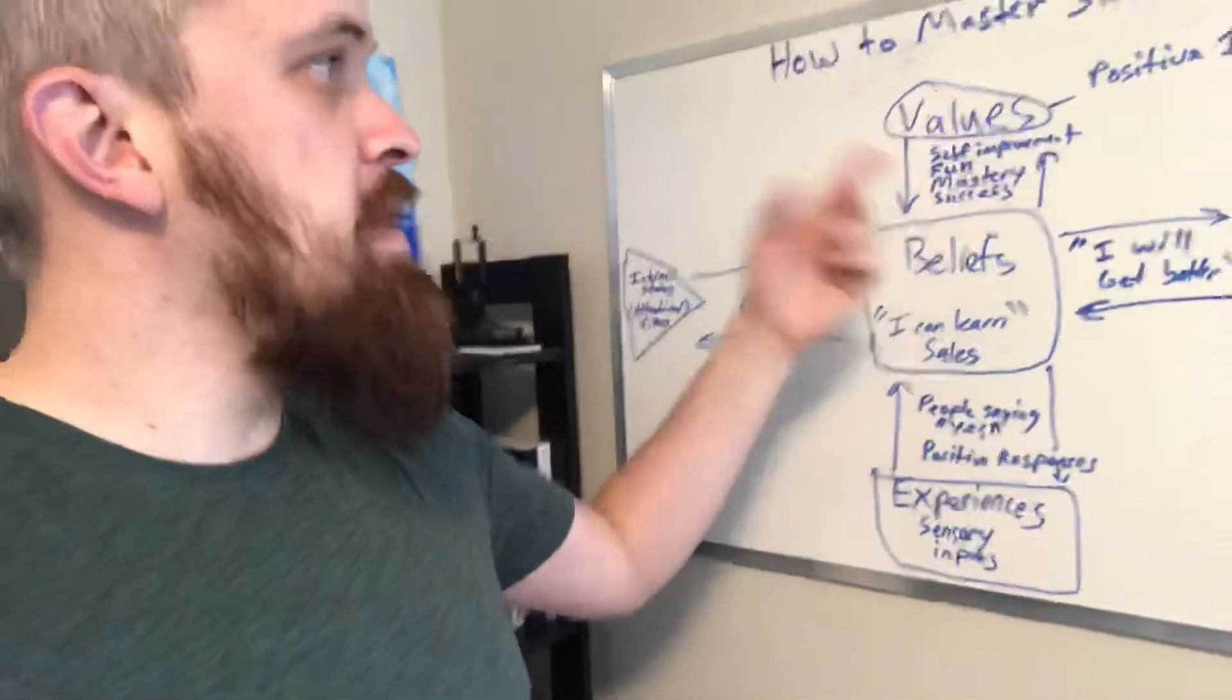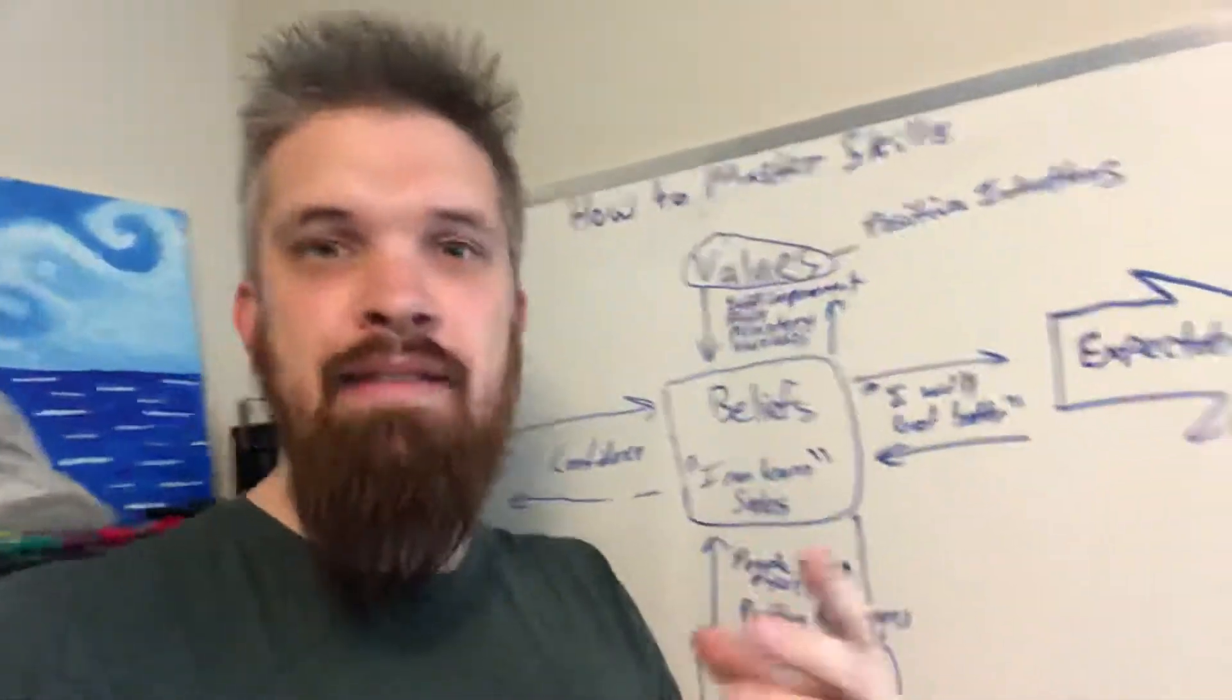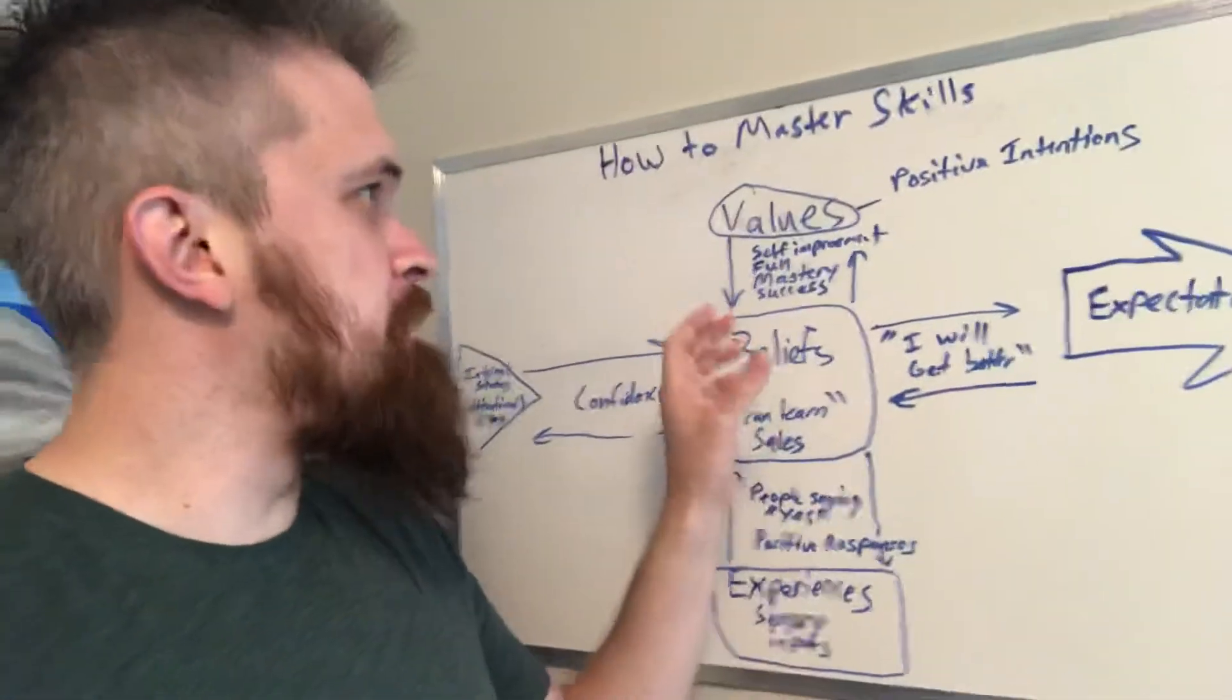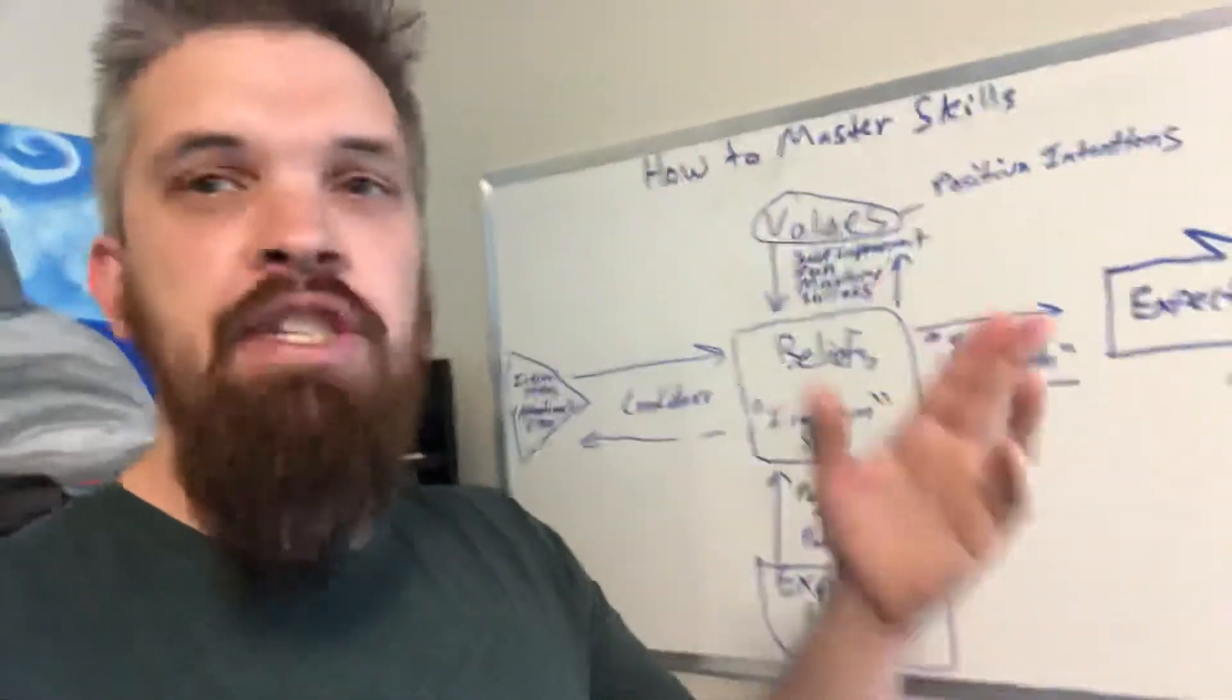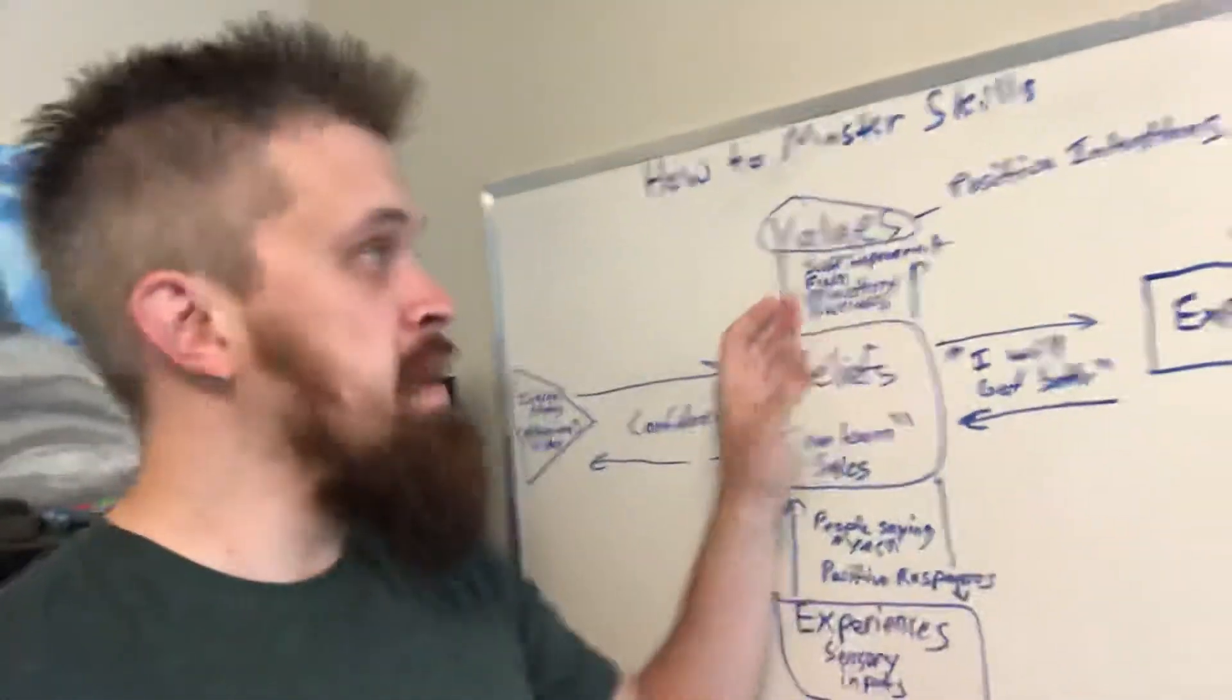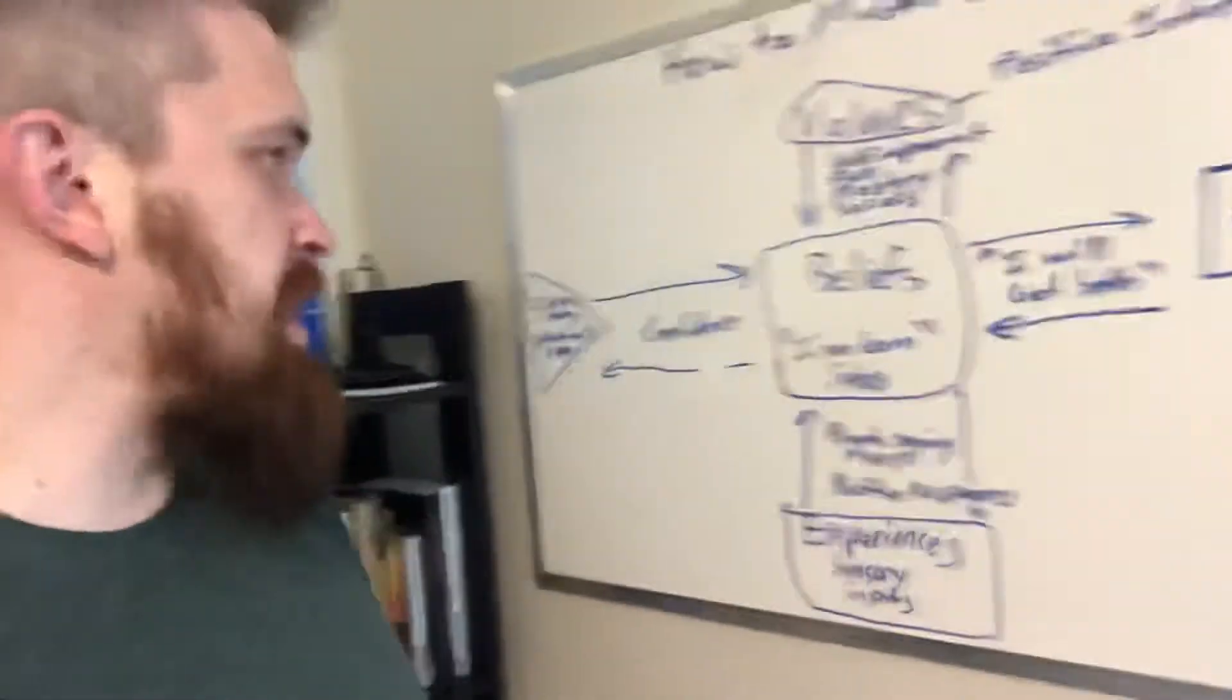And if your values are off, instead of focusing on like say mastery success, you basically focus on like problems. So you're focusing on like not getting rejected and not being in pain. And those are your values, which are going to basically, again, demotivate you from taking action.